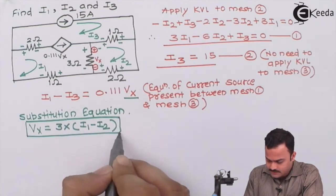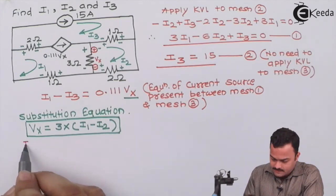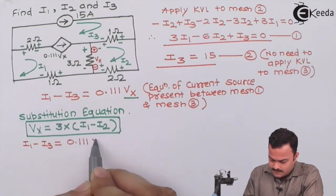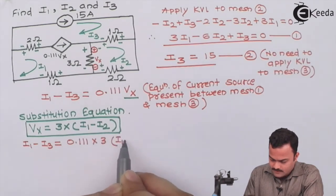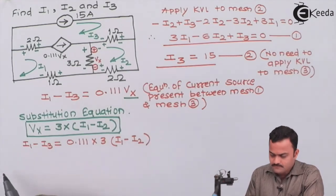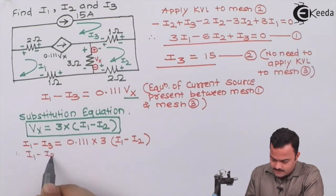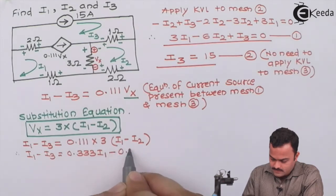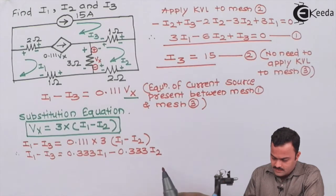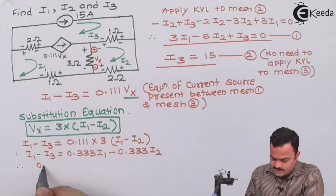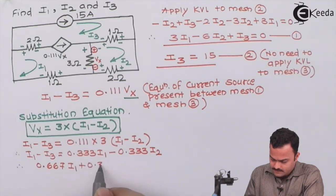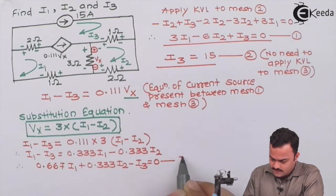Substituting Vx into the current source equation gives: i1 minus i3 = 0.111 × 3 × (i1 minus i2), which simplifies to i1 minus i3 = 0.333·i1 minus 0.333·i2. Further simplification yields: 0.667·i1 + 0.333·i2 minus i3 = 0, as equation number three.